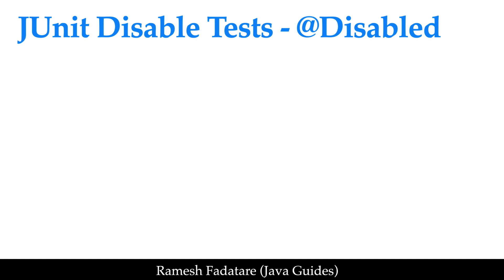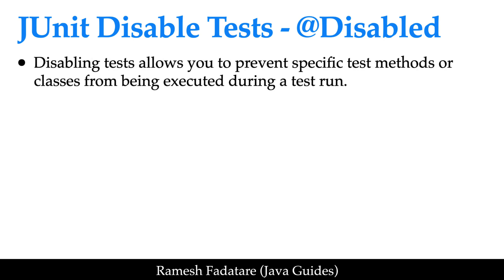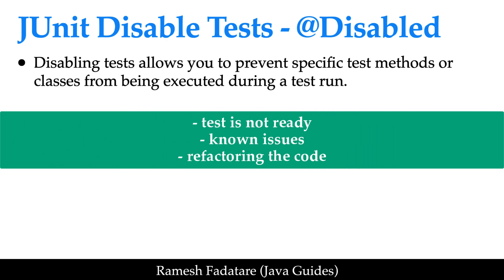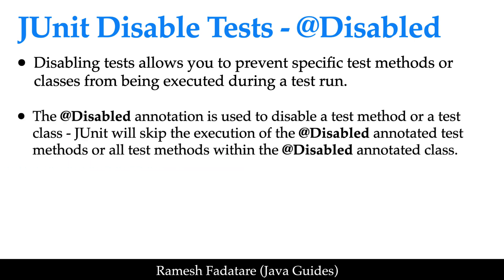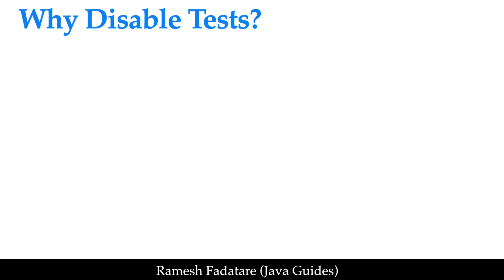Welcome back. In this lecture we'll take a look at how to disable tests using the @Disabled annotation in JUnit. Disabling tests allows you to prevent specific test methods or test classes from being executed during a test run. This can be useful in scenarios where a test case is not ready, needs to be temporarily skipped due to a known issue, or when refactoring code. The @Disabled annotation is used to disable or skip a test method or a test class.